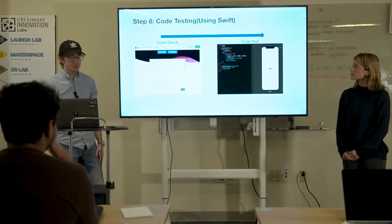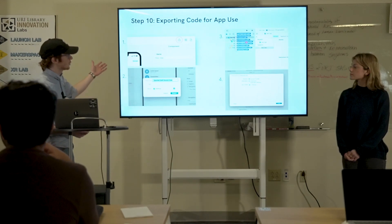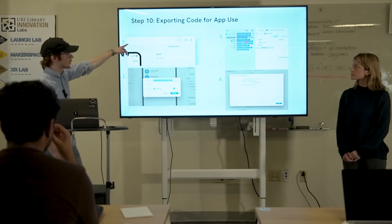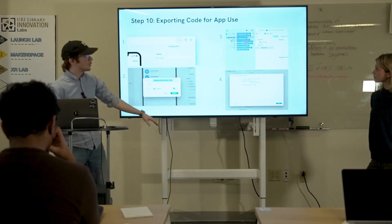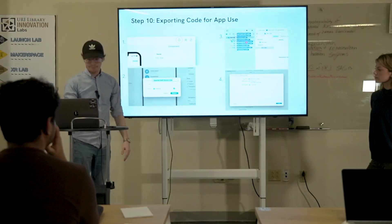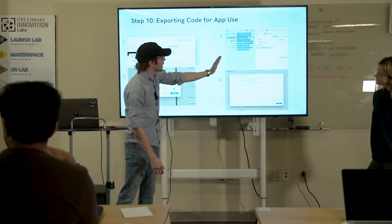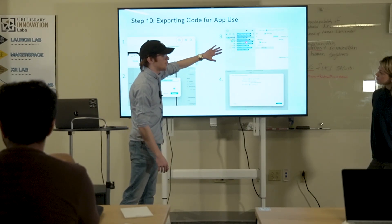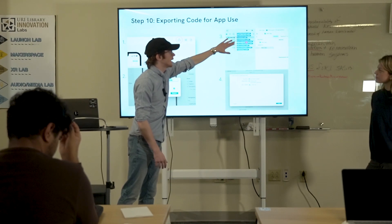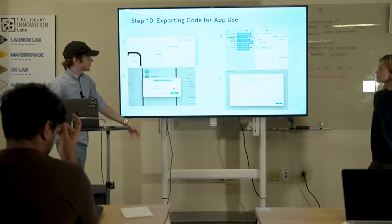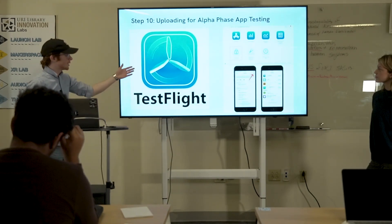The next step after testing your code for the app would be exporting it for use. Once you have everything — this is all in Swift, same program — you go to the corner of the screen, click that little export button, and it pops up the export Swift code screen. You highlight all the files, and it's all on one screen — you have the code in the middle and the phone preview to the right. You highlight the file you're using, click 'copy items if needed,' 'create groups,' 'new app.' And then you can take it to Test Flight.